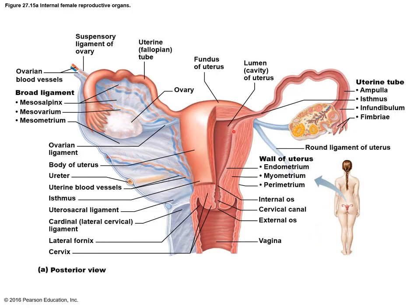On this diagram you can see the uterus, the uterine or fallopian tube, and the fimbriae. The white structure shown here is the ovary. On the right side you can also see a cross-section of the ovary showing follicles, corpus luteum, and a point where ovulation occurs. The fimbriae create a current to move the ovum inside the tube.